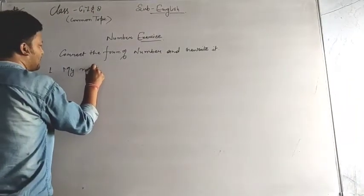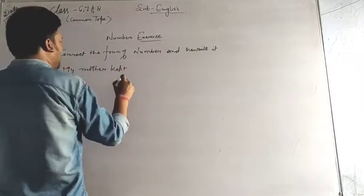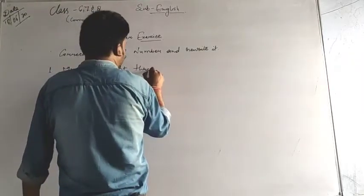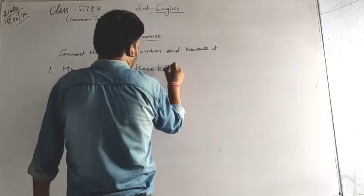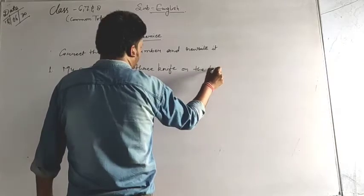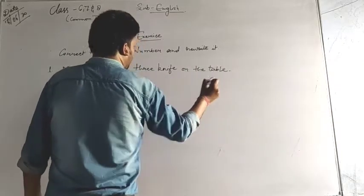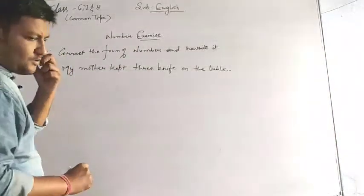So let's take the first one here that is my mother kept three knife on the table. I have given you this also: my mother kept three K-N-I knife on the table. Second one here is the boxes is empty.